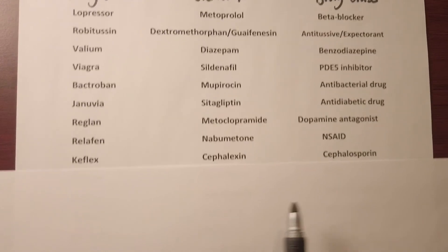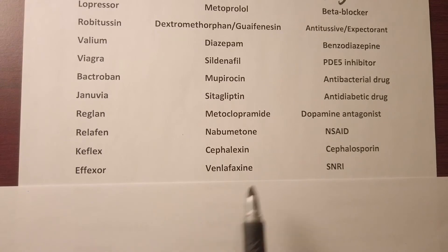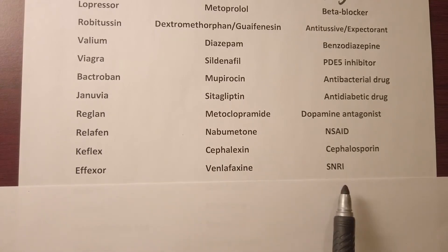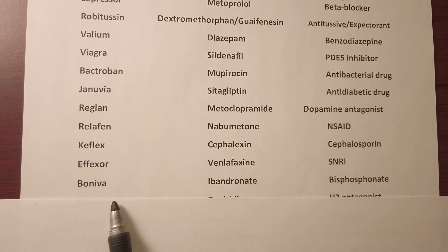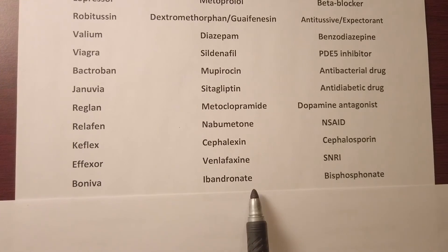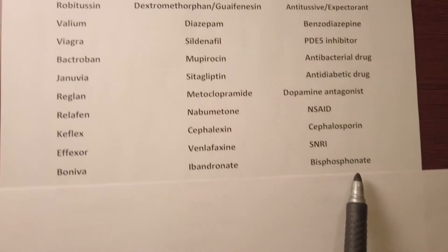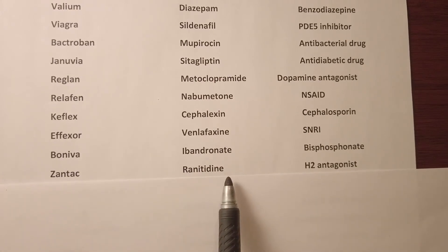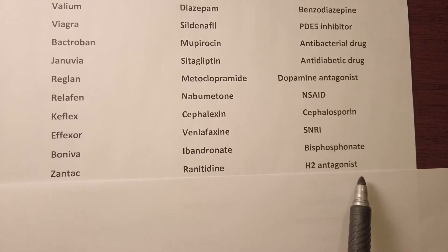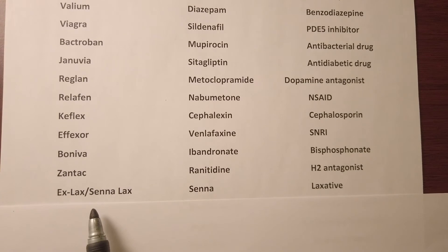Effexor, generic name venlafaxine, is an antidepressant or SNRI. Boniva, generic name ibandronate, is a bisphosphonate used for osteoporosis. Zantac, generic name ranitidine, is an H2 antagonist used for acid reflux.